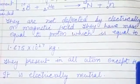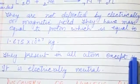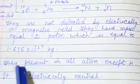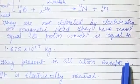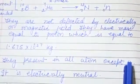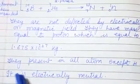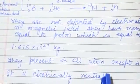They present in all atom except hydrogen because hydrogen is a very lighter gas, so it has no neutron in its nucleus. Except hydrogen, all the atoms have neutron. They are electrically neutral.